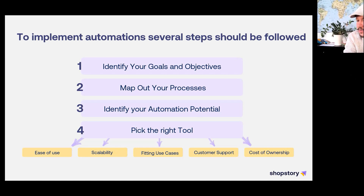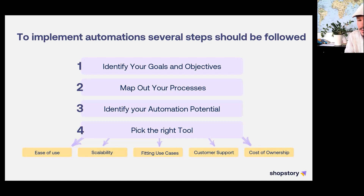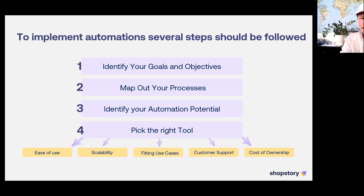Picking the right tool is also important — don't just pick any tool. Check the ease of use. Is it scalable? Does it fit your business use cases? Is there customer support? Sometimes automating is very easy, but sometimes it's not, depending on the software. You really need to make sure there's customer support to help with implementation — otherwise you might spend more time implementing the automation software than actually automating processes.